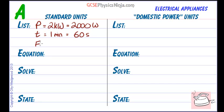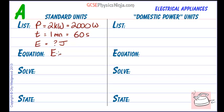What are we trying to find? The energy transformed, in joules. That's the hardest bit. Once you've got that listing sorted out, all we need to do is select an equation. You can look up the equation on your equation sheet, which is given in the exam: energy transformed is equal to power times time. Now all we have to do is put the numbers in.